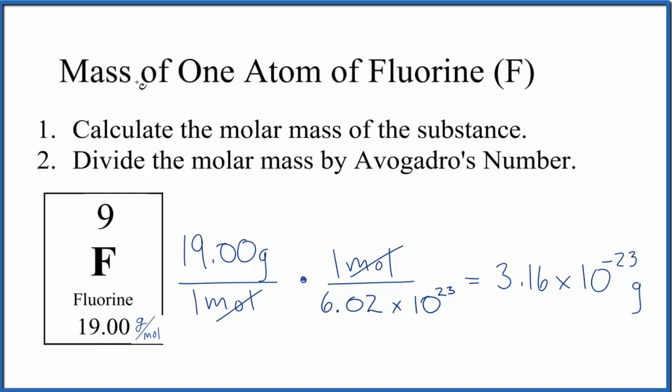If you wanted to have the mass of one atom of fluorine in kilograms, you would divide this by 1,000. So you would end up with 3.16 times 10 to the negative 26th.